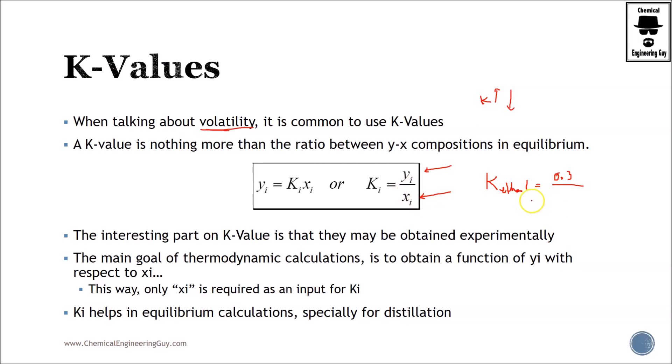We know that ethanol will be in a greater extent in the vapor phase. So let's say that instead of 30%, we have 70%. And in water we have 0.35 only. So this will be a K-value of 2.0.